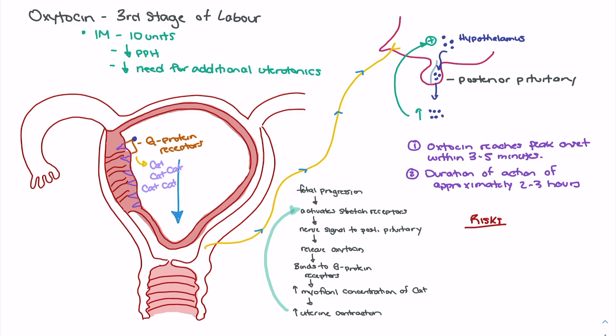There are a few things to be mindful of in terms of risk. The primary risk is that oxytocin has been shown to increase vasoconstriction, which would increase blood pressure. Practitioners should ensure the patient has a blood pressure of less than 160 systolic in order to receive oxytocin, to prevent a hypertensive crisis. Because once the feedback loop starts, it's very challenging to stop, and vasoconstriction from oxytocin could be dangerous in patients with blood pressure over 160, potentially causing a dramatic spike.